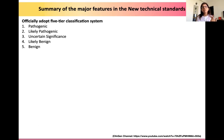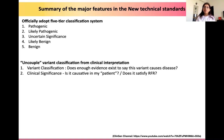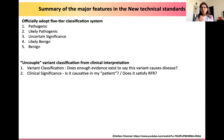We now have to classify the CNV into one of five different classes: it could be pathogenic, likely pathogenic, uncertain significance, likely benign, or benign. The next major feature of the updated technical standards is that it helps us uncouple the variant classification from clinical interpretation. These are really two separate concepts: do we have enough evidence to say that this particular variant causes a particular disease, and is this causative variant the real cause in my patient?